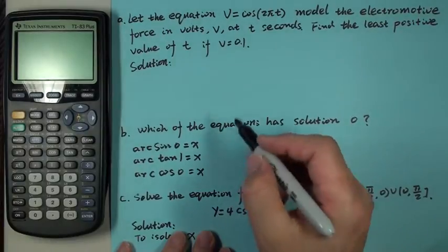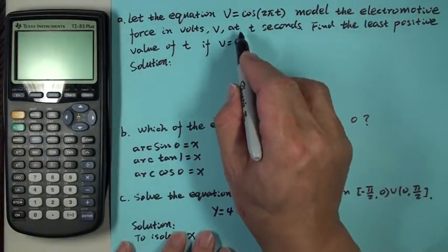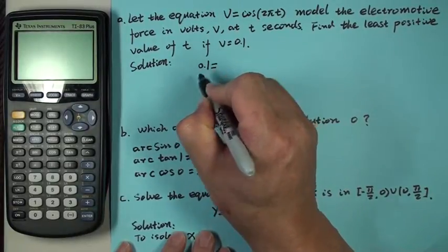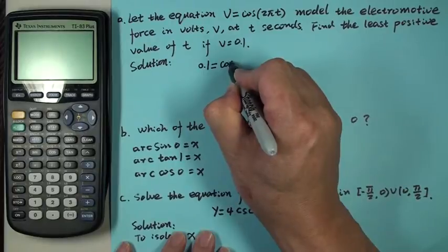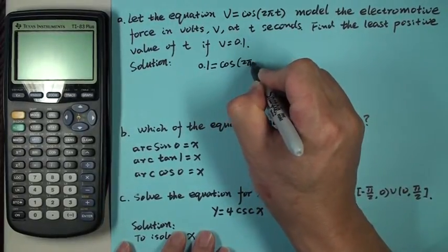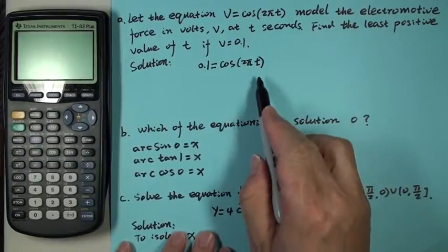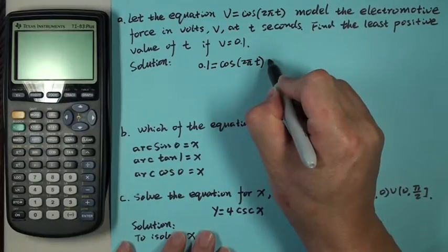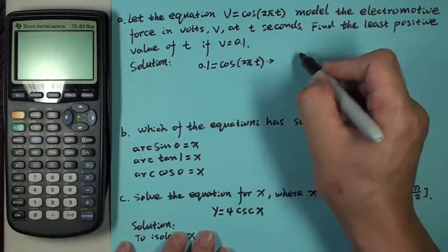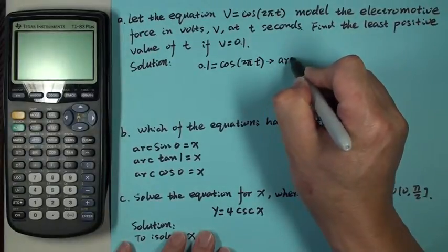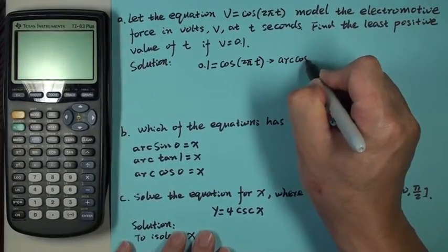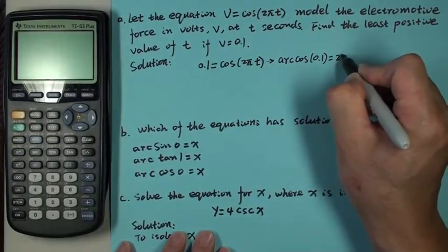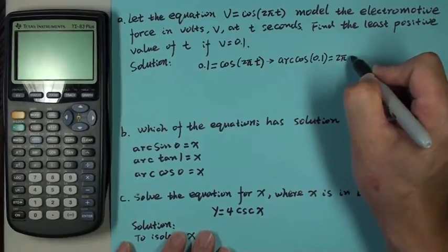Let's do it. V is 0.1, so you want 0.1 on the left, and then cosine 2πT on the right. So you want to solve for T. Now with the knowledge we learned, we have arc cosine 0.1 is 2π times T.